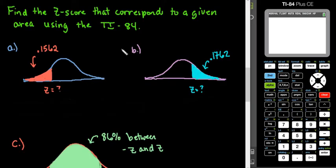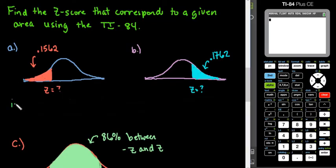Because we are given the area, we want to do the opposite of what we normally do to find the area. So this time we want to find the Z-score. In the calculator, the way that it's programmed to do the opposite is the inverse. So what we are going to look for is the inverse norm, and majority of graphing calculators give you the area to the left only.